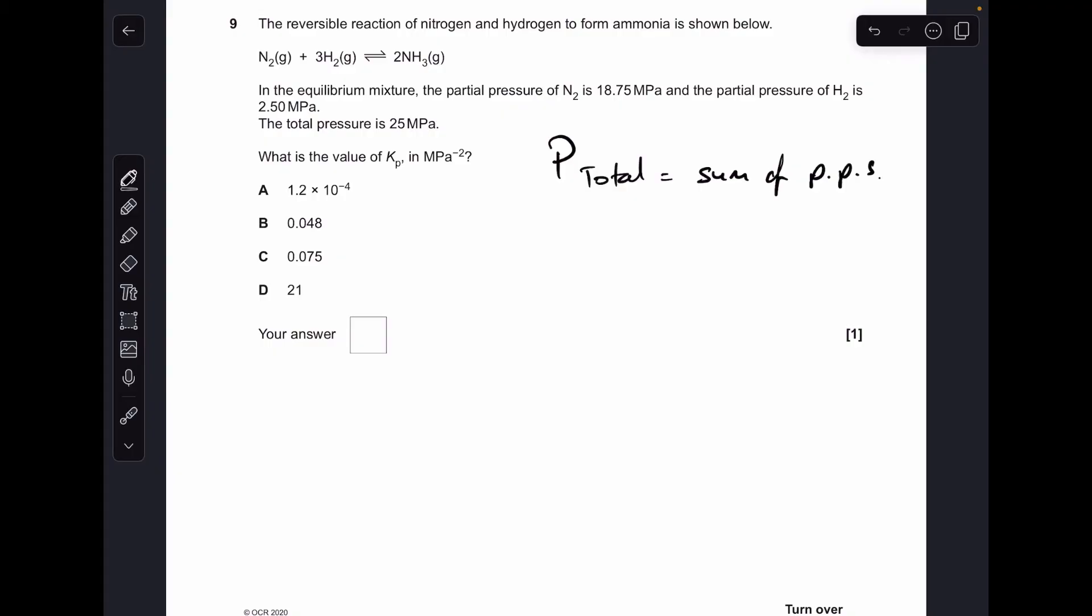Moving on, number nine. So the total pressure is equal to the sum of the partial pressures. So that means 25, the total pressure, is equal to these two plus the partial pressure of the ammonia. So we'll just solve for that partial pressure, it comes out to 3.75. And what we're going to do now is feed those numbers, these partial pressures, into the Kp expression to calculate Kp. So there's the numbers, when you do the calculation you get 0.048. So option B was the right answer.